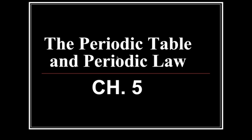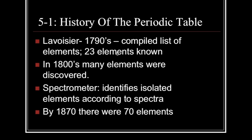Let's go ahead and start talking about Chapter 5, the Periodic Table and Periodic Law. In the early 1790s, there was a compiled list of elements of only 23 of the known elements. And in the 1800s, many of the elements were discovered. They used spectrometers, which identifies and isolates elements according to their spectra. And by 1870, there were 70 known elements in the world.